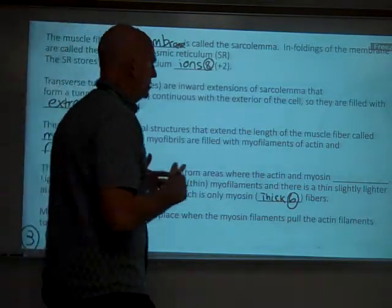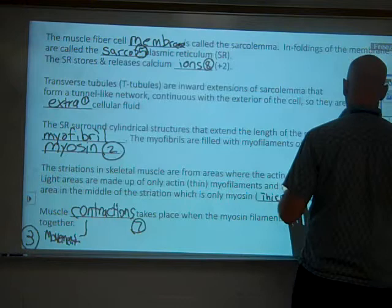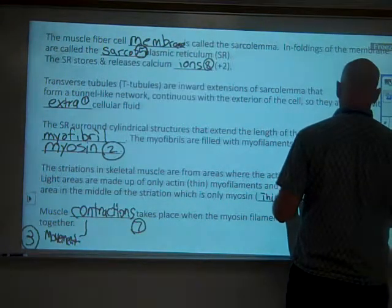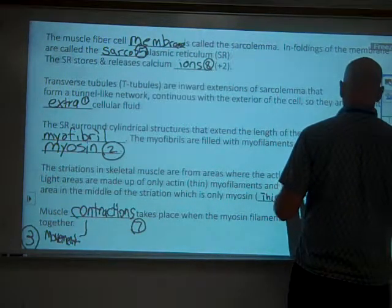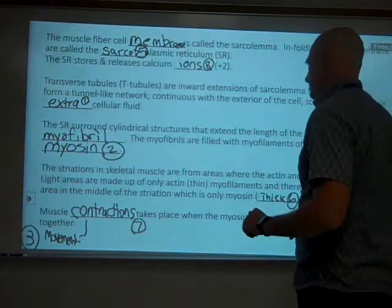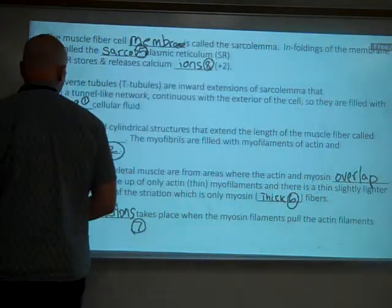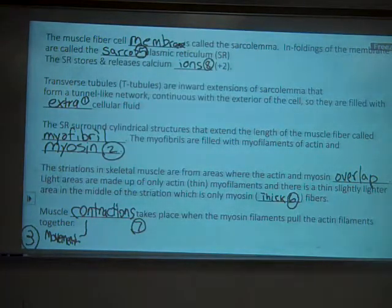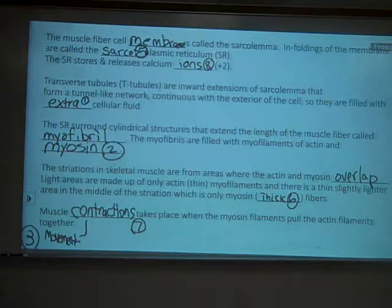So where the actin and the myosin overlap with each other, even in the relaxed state, is where they're darker. So they overlap in those regions. Where they don't, and in particular, this is an area that will get shorter during a contraction.